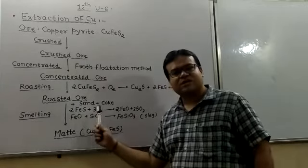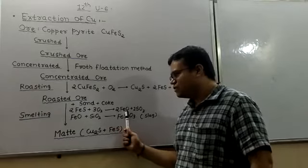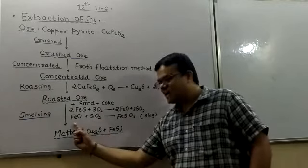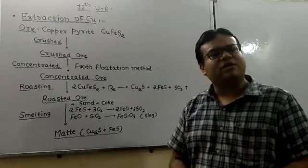This iron sulfide further oxidizes with oxygen, then it will form iron oxide, that is ferrous oxide. And already sand is added, so this acidic and basic are forming iron silicate slag which is floating on the surface and easy to remove.